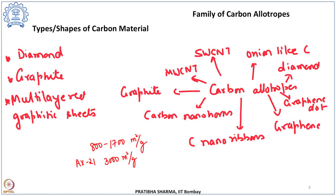There are different ordered carbon nanostructures like single-walled carbon nanotubes, considered to be rolled graphene sheets, and multi-walled carbon nanotubes. There are also other carbon structures like onion-like carbon, carbon dots, fullerenes, graphene dots, multilayered graphitic sheets, graphene, carbon nanoribbons, carbon nanohorns, and carbon nanofibers. So there are a large number of carbon allotropes existing.